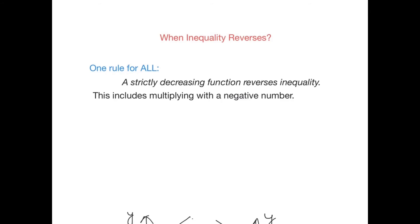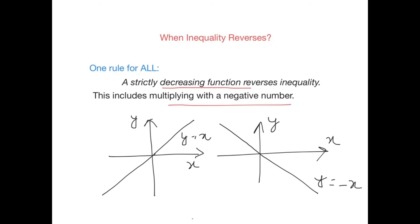Now let's check out the conditions when the inequality reverses. I follow one simple rule: a strictly decreasing function reverses the inequality, and this includes multiplying by a negative number. The first graph shows y = x, an increasing function. By multiplying with a minus sign, the graph changes from increasing to decreasing, and that is what reverses the inequality.